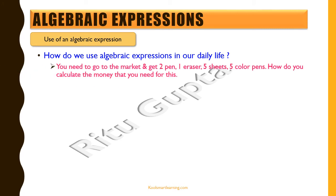For example, suppose you need to go to the market and get 2 pens, 1 eraser, 5 sheets, and 5 color pens. You can create an expression: 2p plus e plus 5s plus 5c, where p is the cost of a pen, e is the cost of the eraser, s is the cost of a sheet, and c is the cost of color pens — and that gives you the total cost. If you last minute decide to change the pen, just change the value of p and you'll get the new total cost using the same expression.